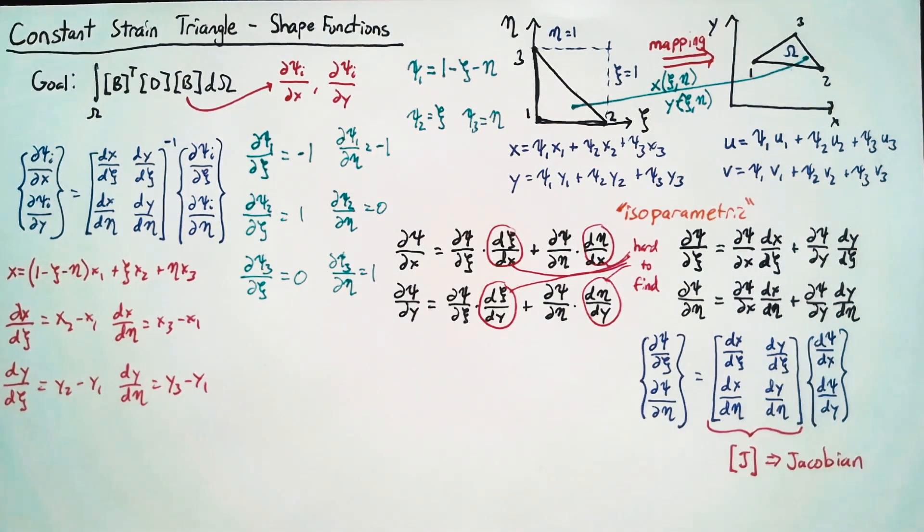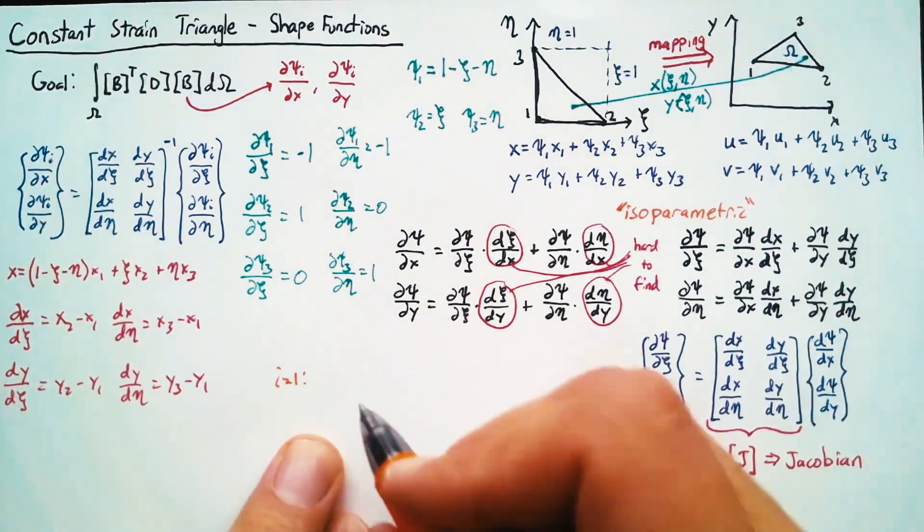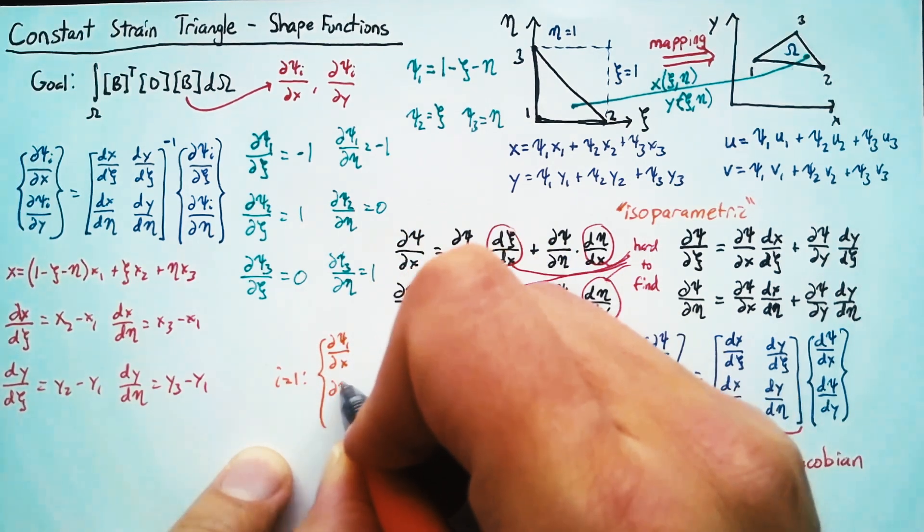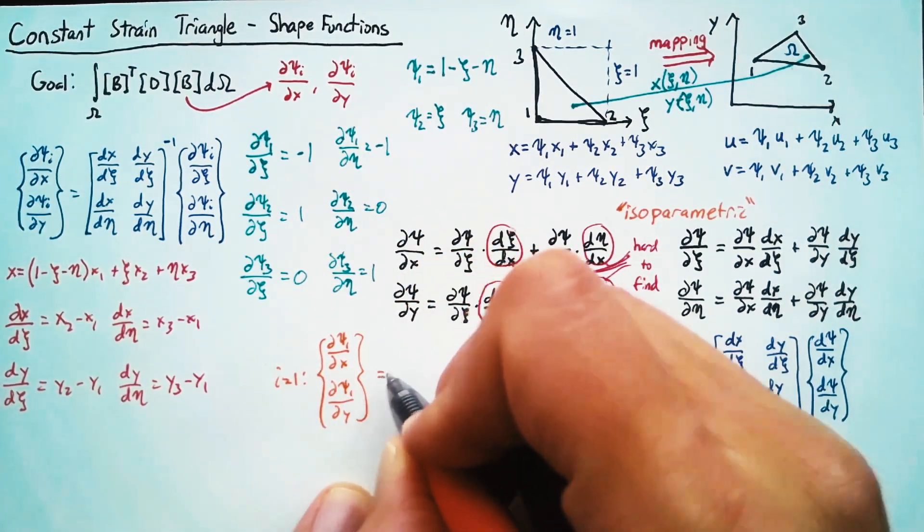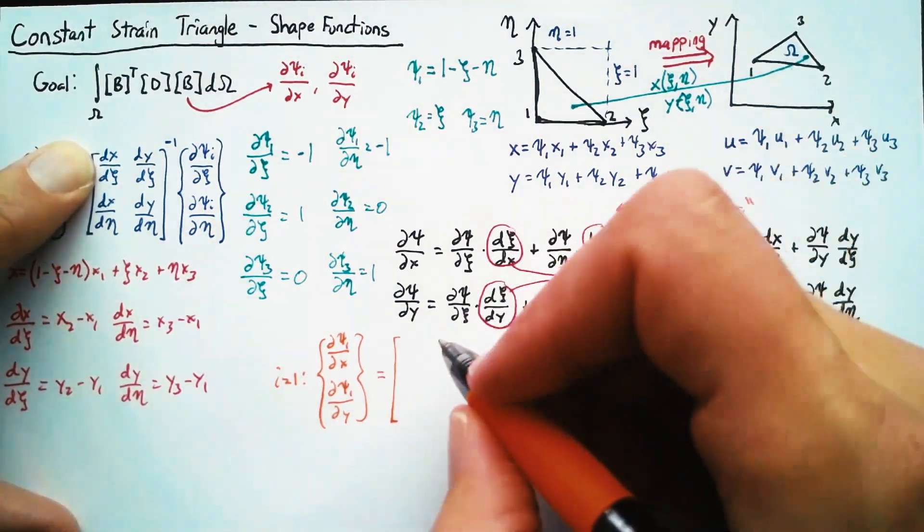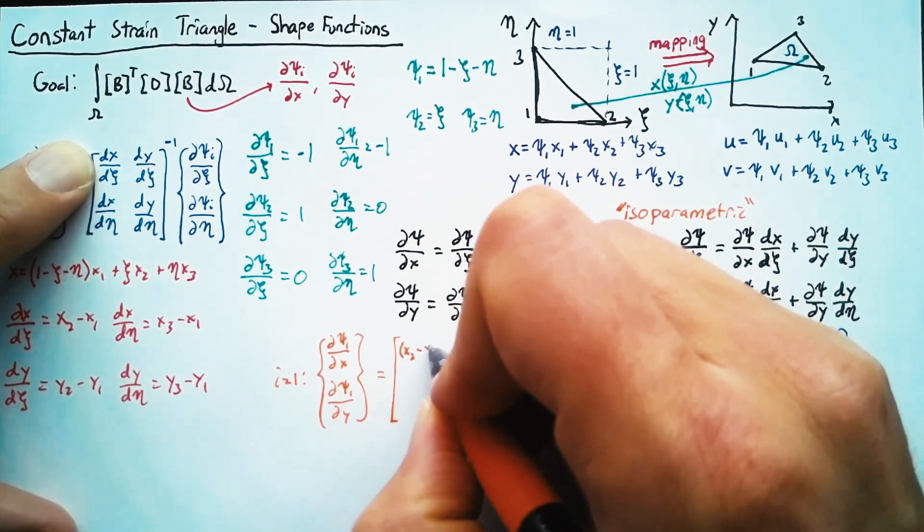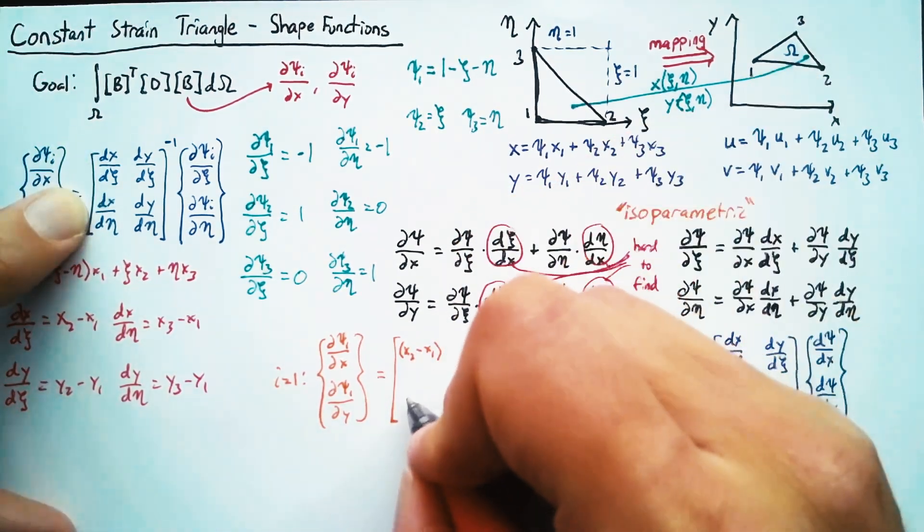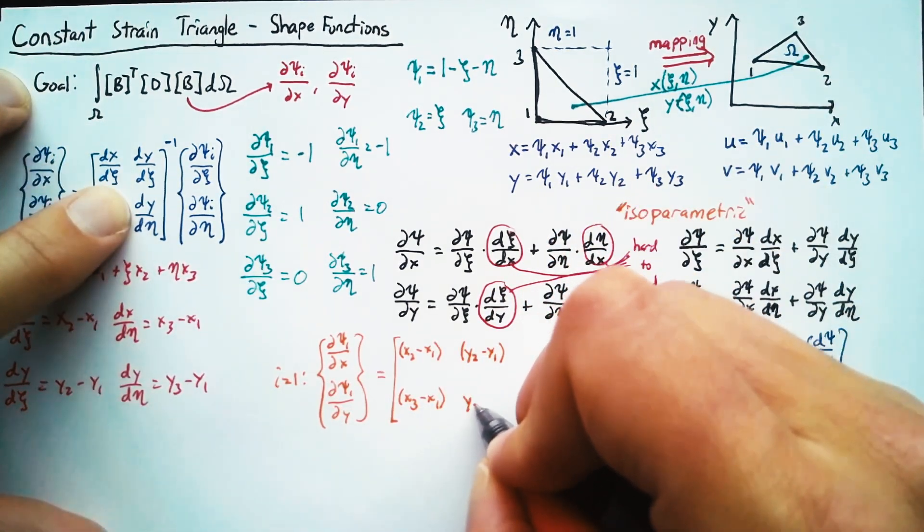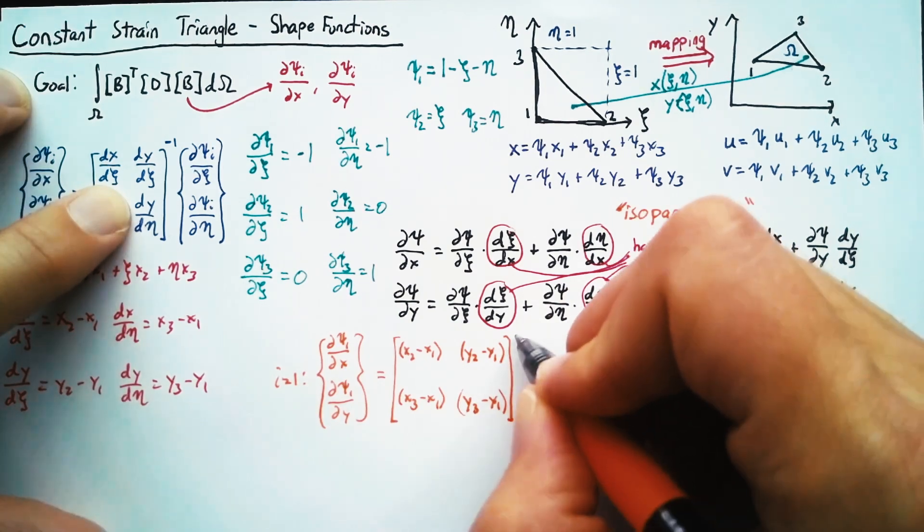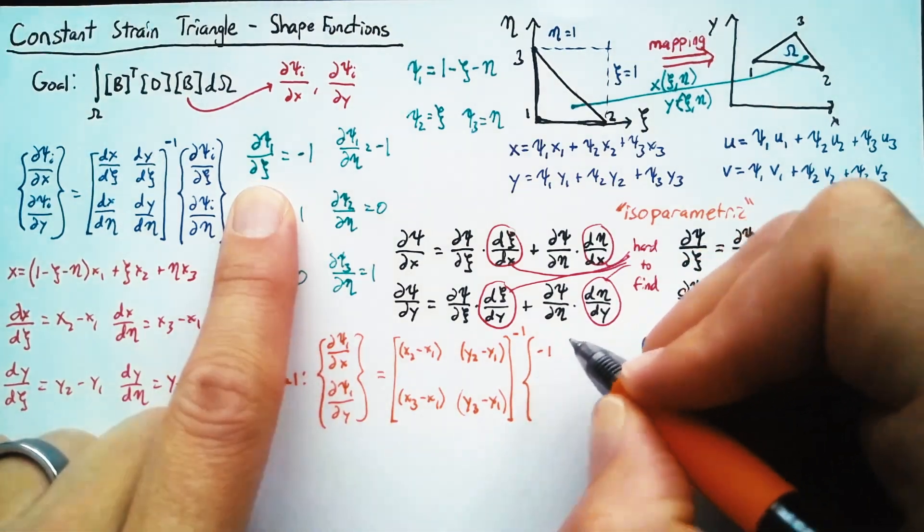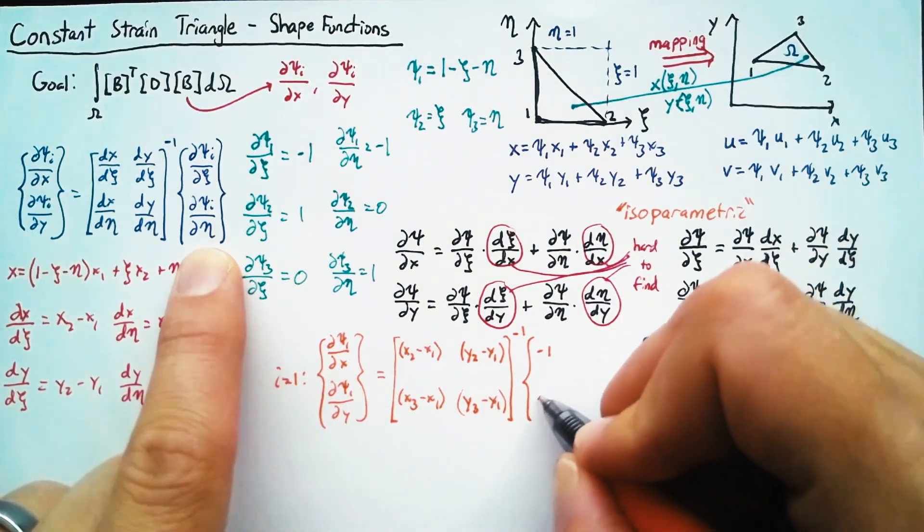So just as a quick example, let's do i equals one. We can find dPsi one/dx and dPsi one/dy by taking these values. So dx/dC is just x two minus x one, dx/deta is just x three minus x one. And then the same for y. And that matrix is inverted. And dPsi one/dC is just negative one. And the same is true for dPsi one/deta.